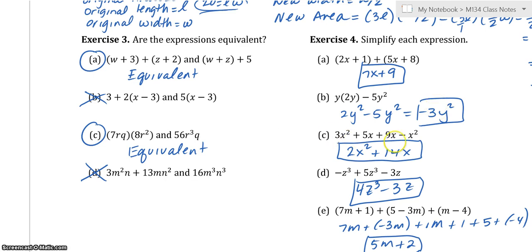This one, you can only move this around if you think of this as a plus negative X. So this would be this term and this term would be 3X squared plus negative 1X squared, which is the 2X squared. And then we have the 5X plus 9X is the 14X.